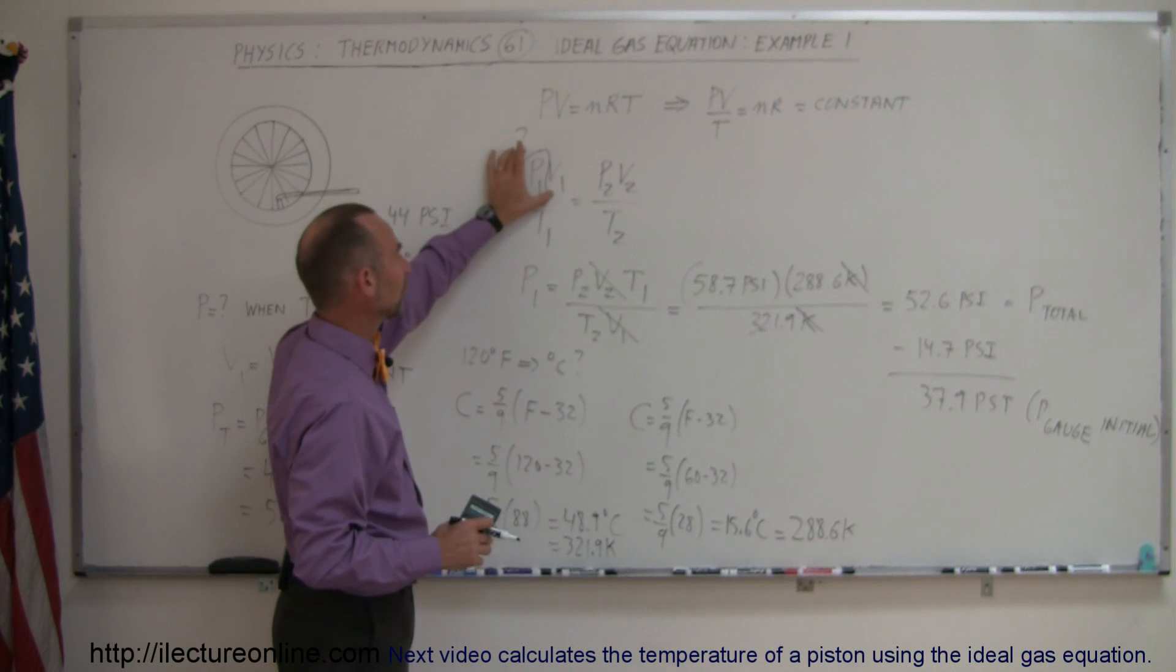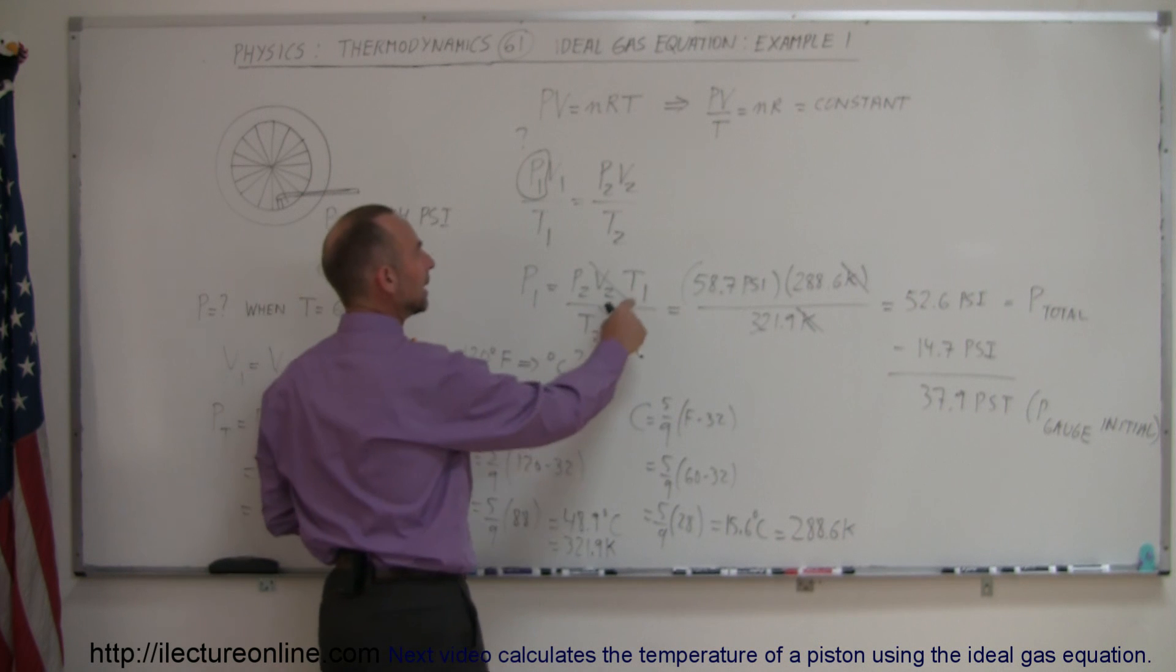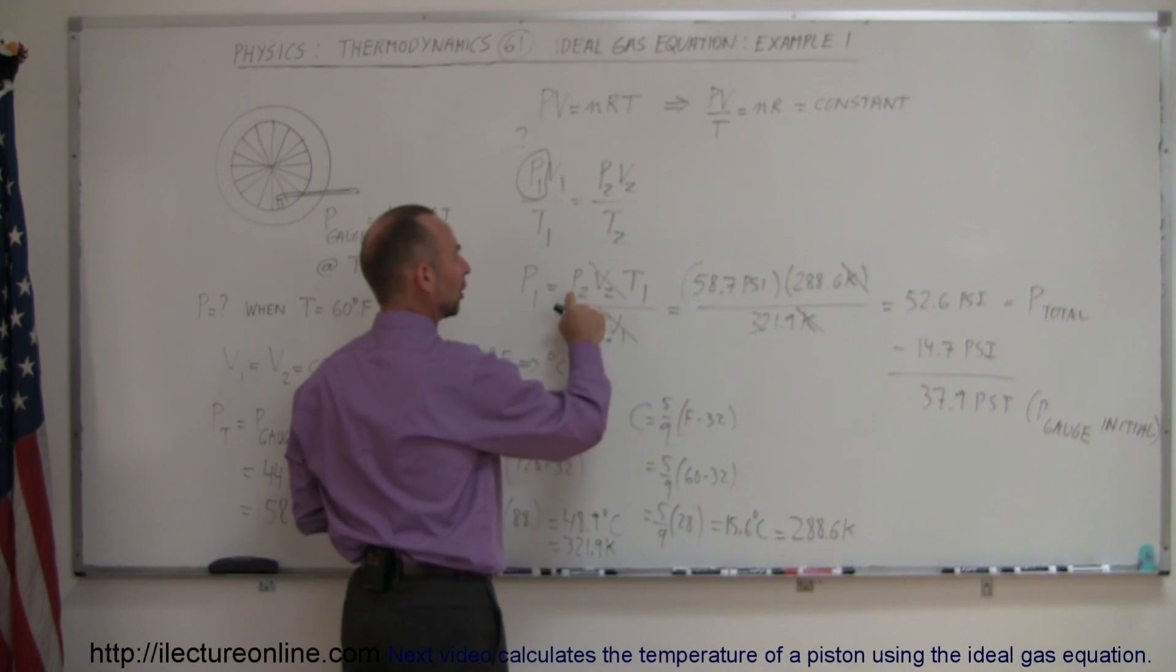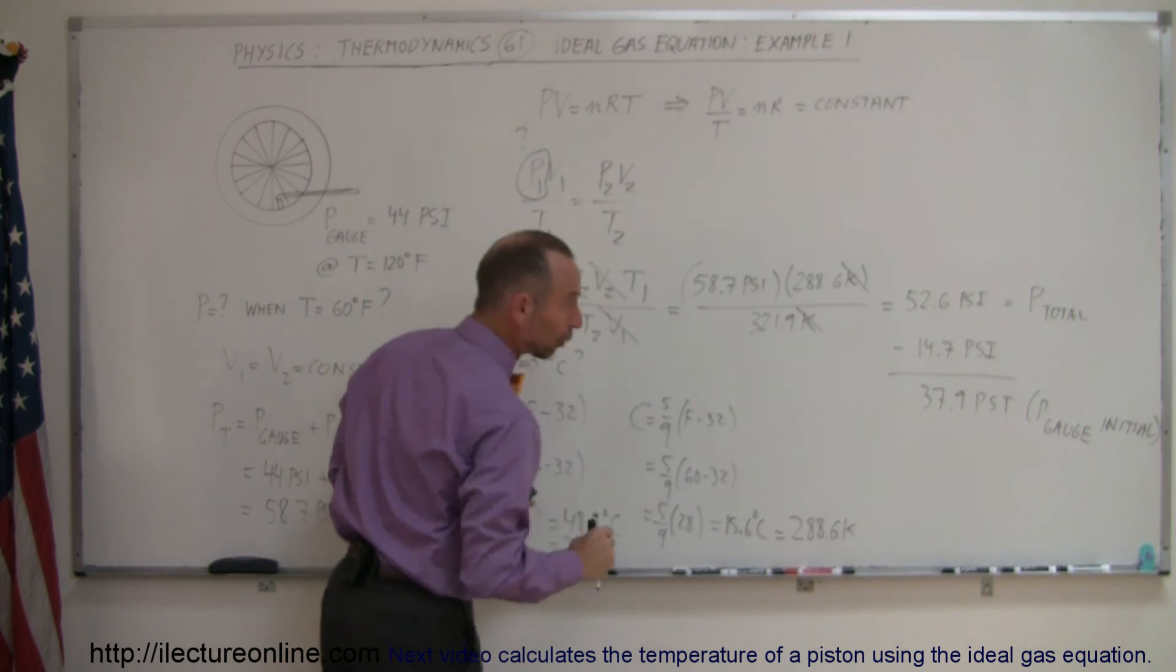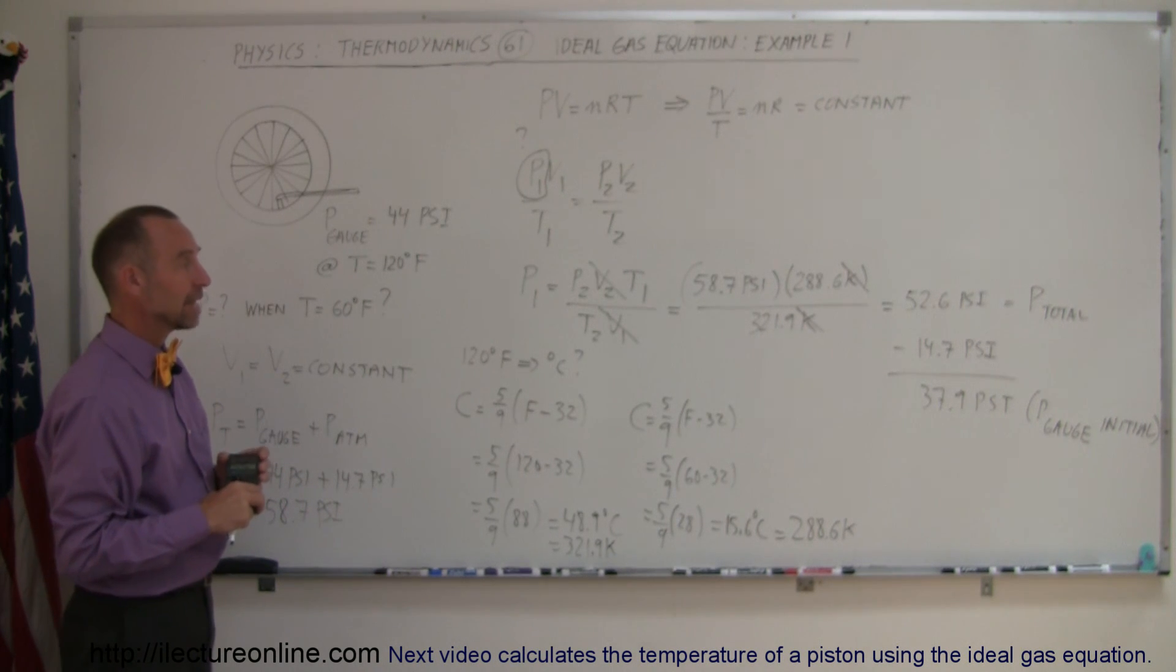We solve for the initial pressure, P1. We know that the volumes will not change in the tire. We plug in the temperature when it's cold, the pressure when we're out in the desert, and the temperature when we're out in the desert. And the answer then, when you subtract the 14.7 psi for the gauge pressure.